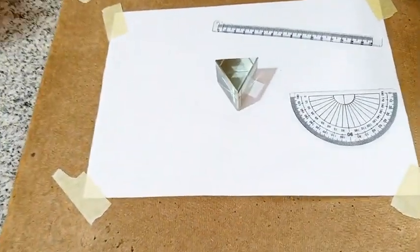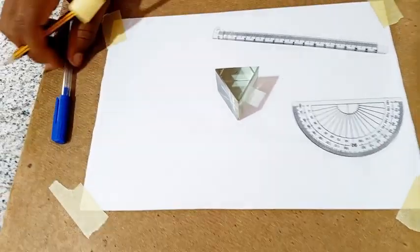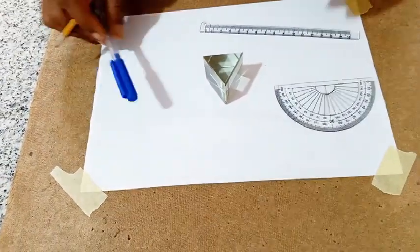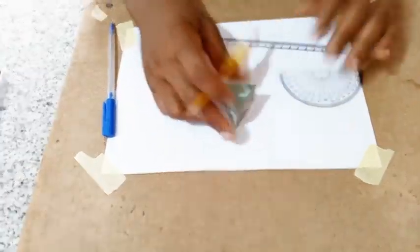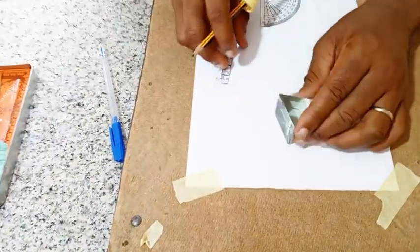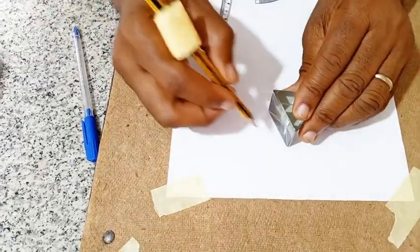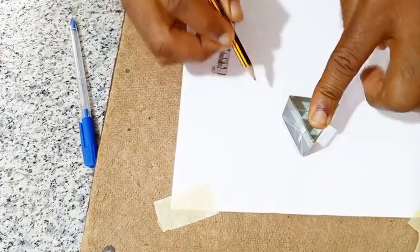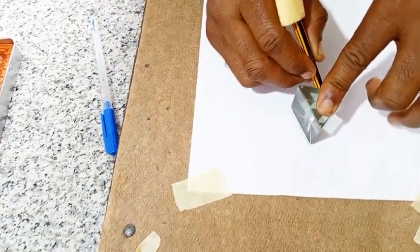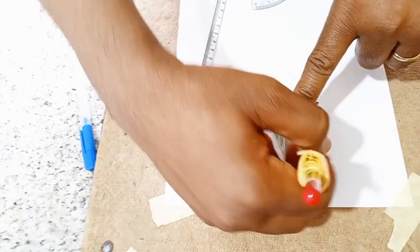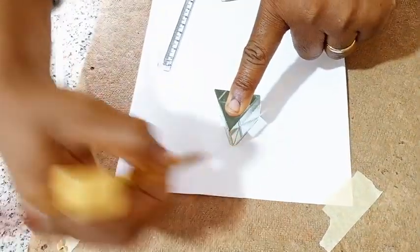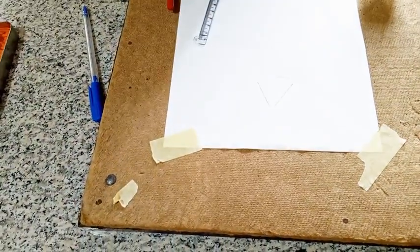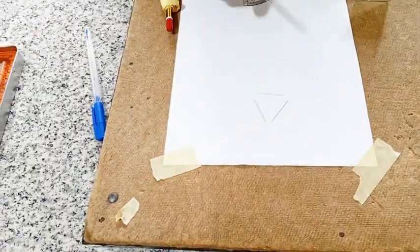Get your ruler and get your protractor as you can see them, then use your pencil. Position it at your convenience, mark out the outline of the triangular prism by marking out the outlines, then remove your prism and complete the triangle with your ruler.